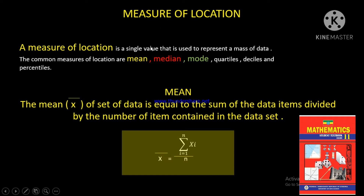A measure of location is a single value that is used to represent a set of data. The measures of location include: mean, median, mode, quartile, decile, and percentile.